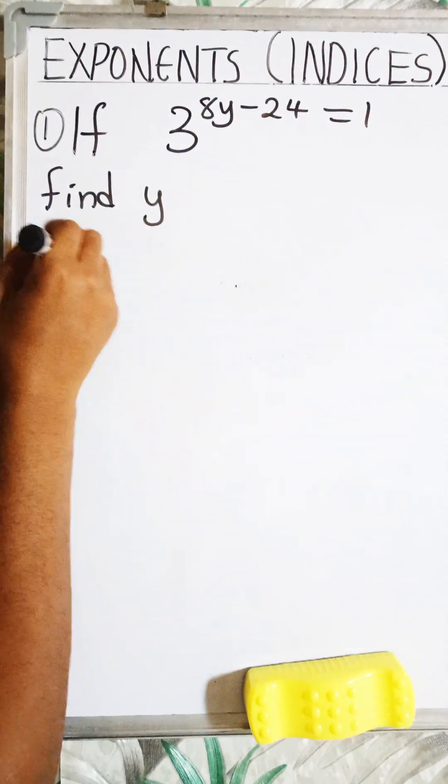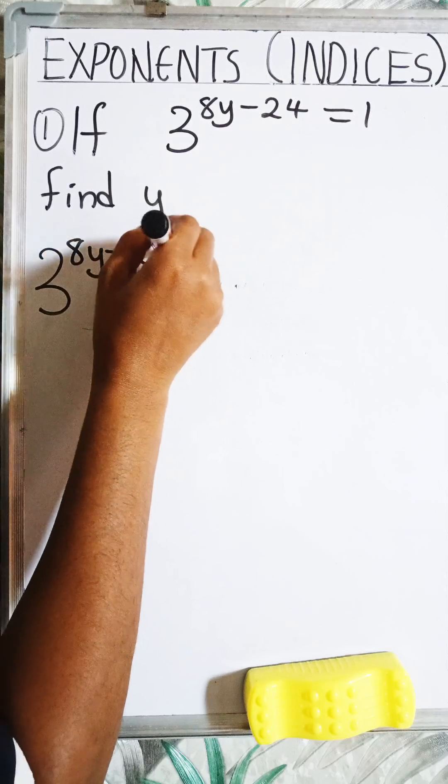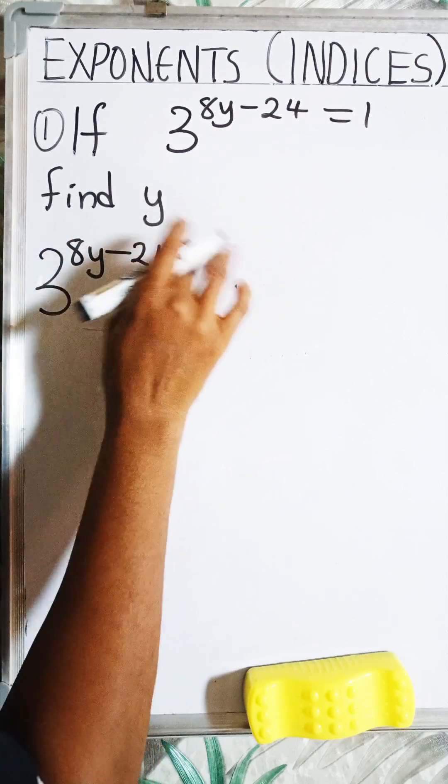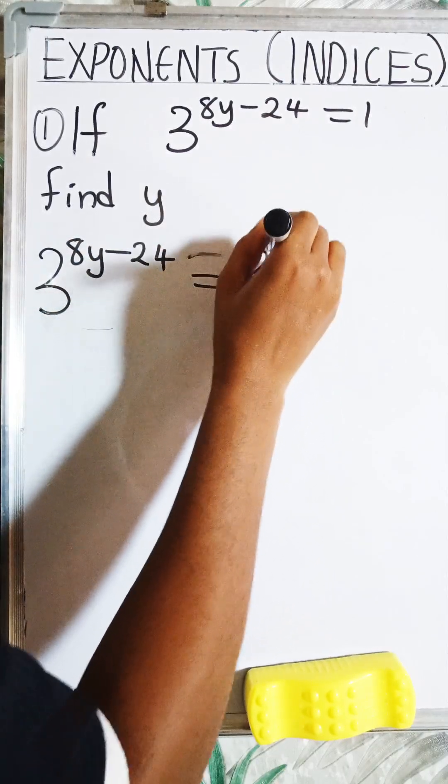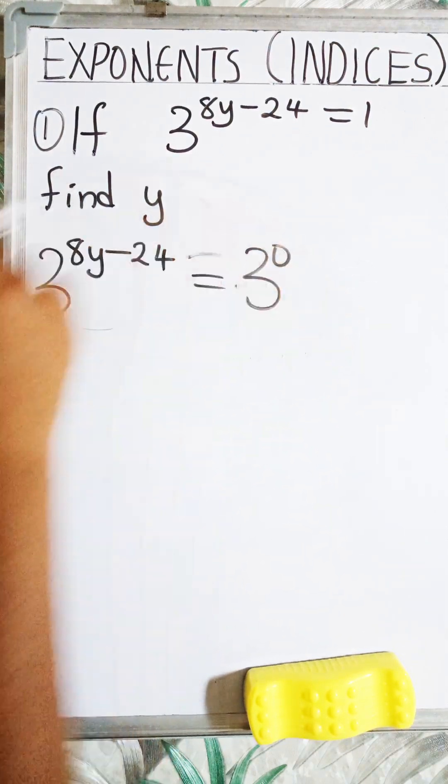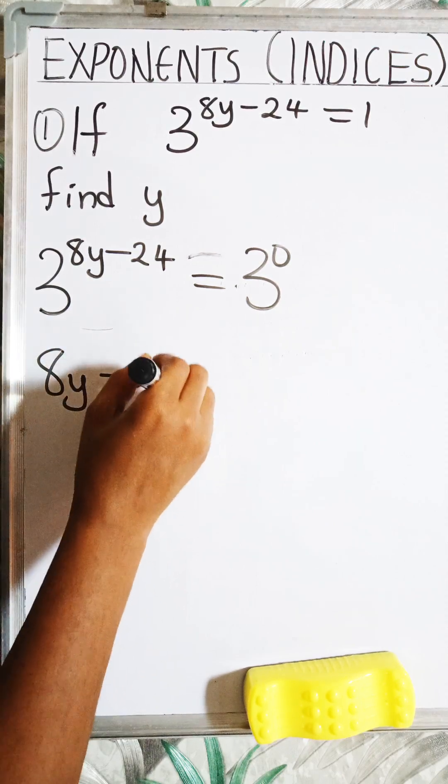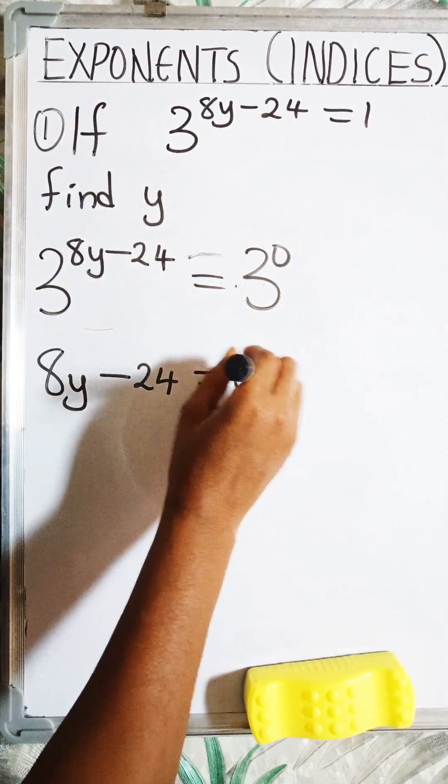So here I'm going to have 3 raised to the power 8y minus 24 equals to 3 raised to the power 0. Now because the bases are the same, I can equate the powers.